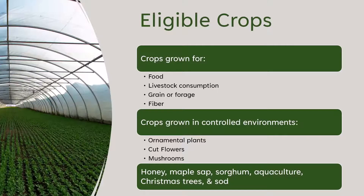The eligible crops list is quite extensive — any crops grown for food, livestock consumption, or fiber; crops in controlled environments like greenhouses or high tunnels; ornamental plants; cut flowers; and even Christmas trees and sod.